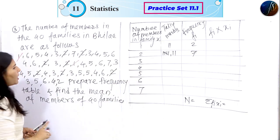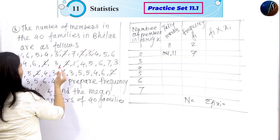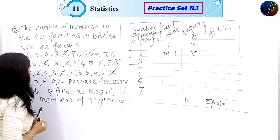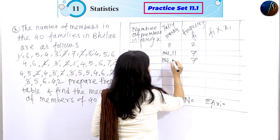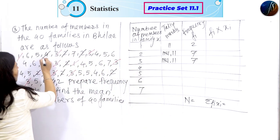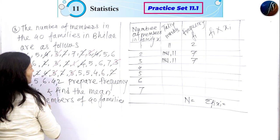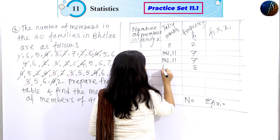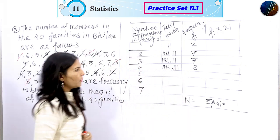Seven times three. For xi = 3, we count: one, two, three, four, five, six, seven. For xi = 4, we count: one, two, three, four, five, six, seven. For xi = 5, we count one through eight. Eight times four. Eight times five.